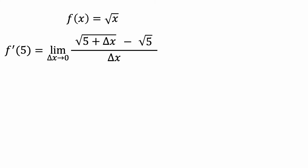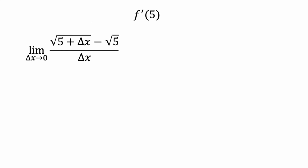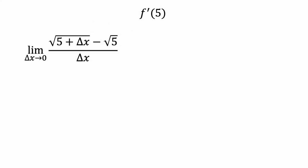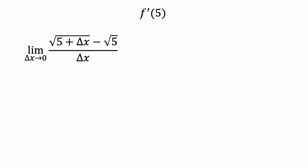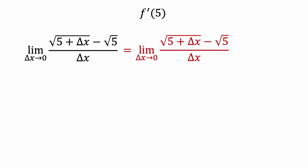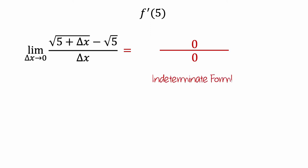Now let's try to evaluate this limit to determine a numerical value for the instantaneous rate of change. Your first instinct might be to break apart the square root of the sum of 5 and delta x, but this is not a valid algebraic operation, so we need to try something else. Another attempt might be to plug in 0 for delta x. In the first square root, this just leaves you with 5, and the numerator becomes 0. The denominator is also 0, so this leaves us with an indeterminate form and can't be evaluated. So we need a different technique for evaluating this limit.